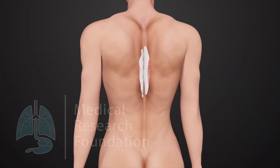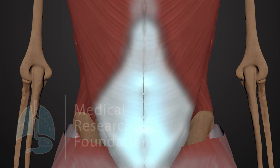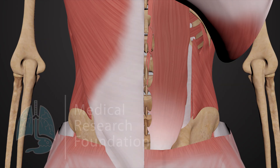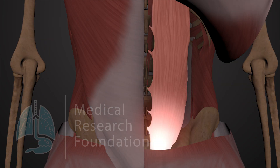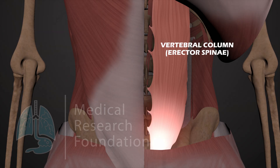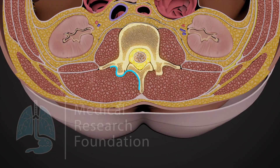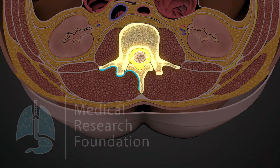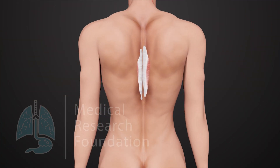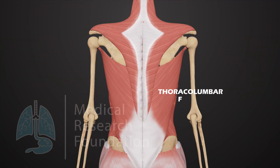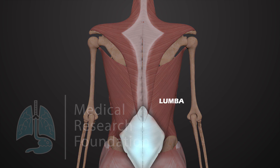It is the name given to the deep fascia on the back of the trunk. It binds the long extensor muscle of the vertebral column, erector spinae, to the posterior lateral surfaces of the vertebral bodies. For descriptive purposes, the thoracolumbar fascia is divided into two parts: lumbar and thoracic.